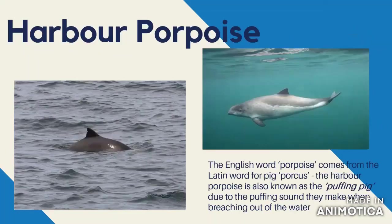The harbour porpoise is the most common cetacean — dolphins, porpoises, and whales — that you'll see around Northern Irish waters. The harbour name comes from the fact that you'll often see them quite close to shore, near harbours and bays. The name comes from the Latin word for pig, as they were known as the puffing pig due to the chuffing noise they make when they breach. They will often be seen feeding on very large amounts of fish to regulate their body temperature. If you're on the coast, just look out for that little triangular dorsal fin — that might be a harbour porpoise.